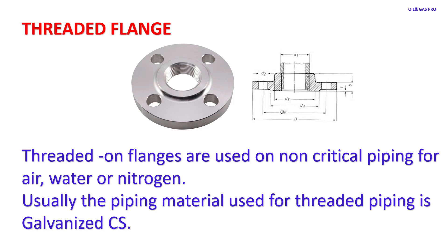Threaded flanges are used on non-critical piping for air, water, or nitrogen. Usually, the piping material used for threaded piping is galvanized steel.